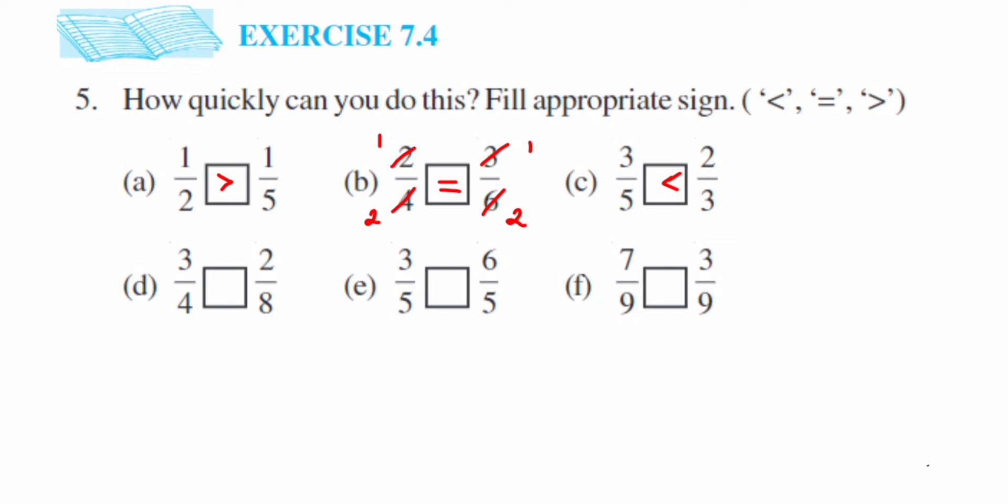Next we have 3 by 4 and 2 by 8. So here I can reduce 2 by 8 and bring it to the reduced form. So 2 ones and 2 twos are 2, 2 fours are 8, so I got 1 by 4. If you see, denominators are same, it's a like fraction. Compare the numerator. Here 3 is greater than 1, it means 3 by 4 is greater.